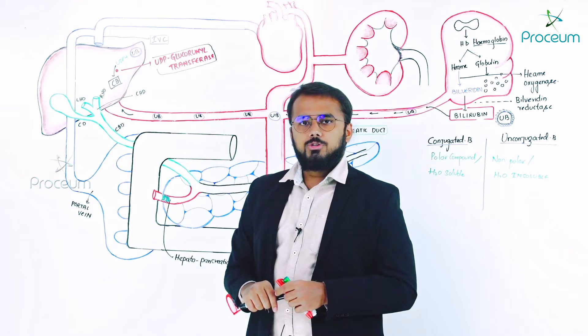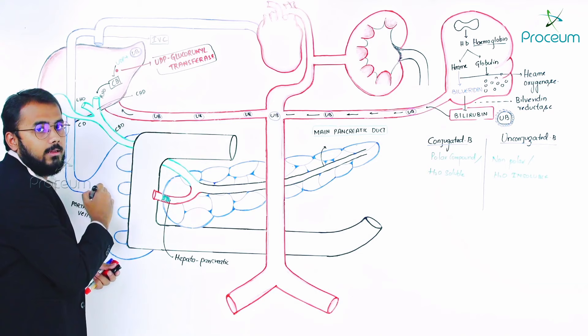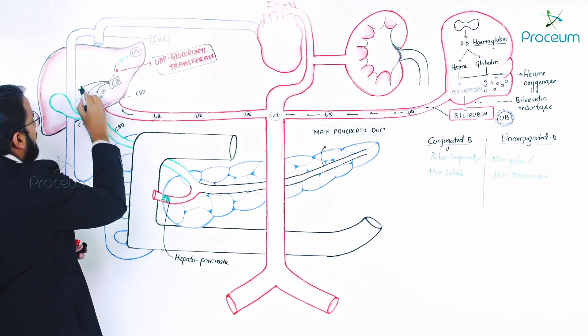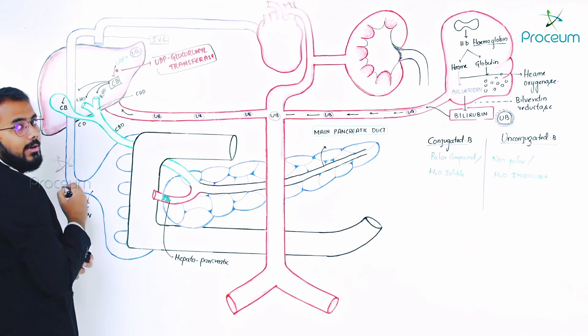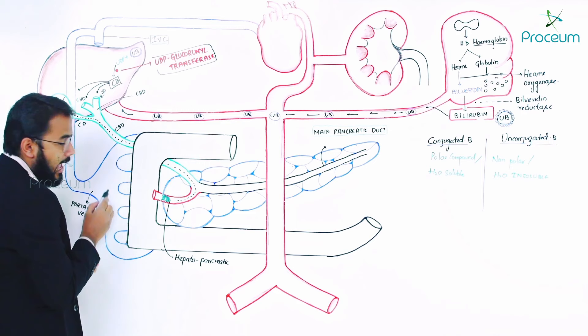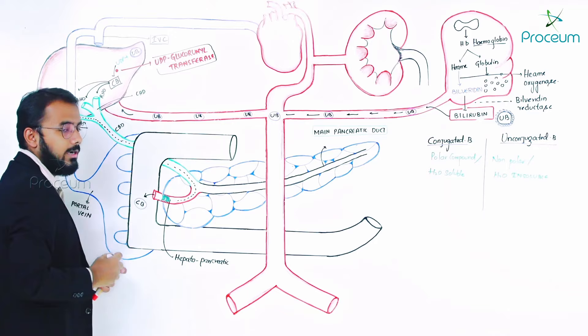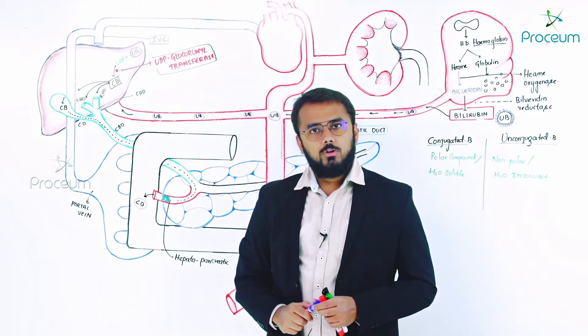The conjugated bilirubin will enter into the right or left hepatic duct, or directly into the gallbladder. It then travels through the common bile duct, into the hepatopancreatic duct, and from there the conjugated bilirubin is released into the descending part of the duodenum.